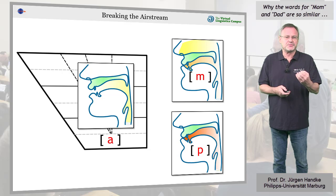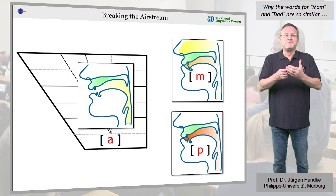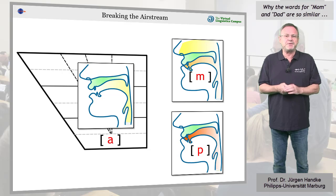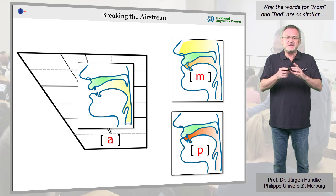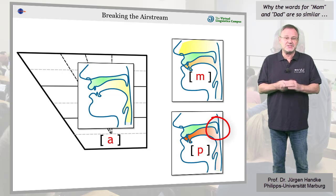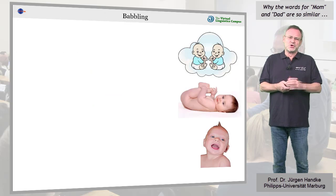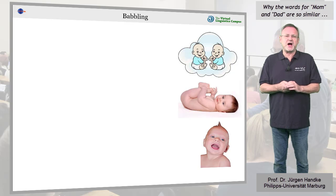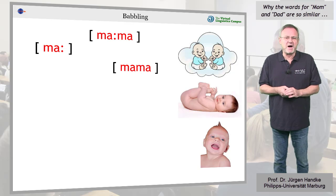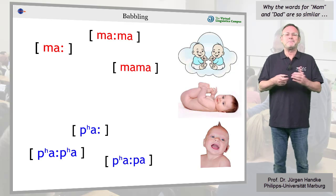Anatomically, m is even simpler than p, since the velum does not have to be raised. It can simply remain in its rest position. So the first sounds babies produce are sequences of ma's and later pa's.